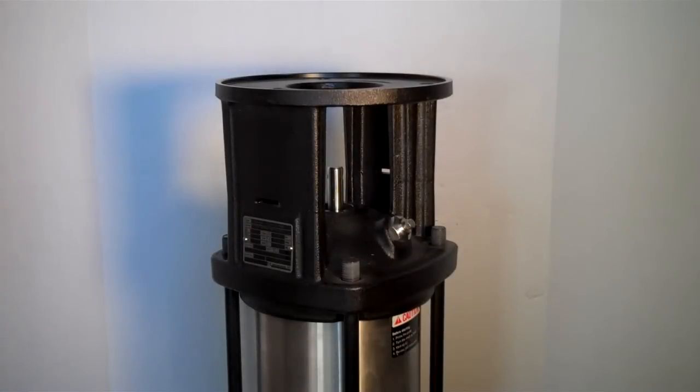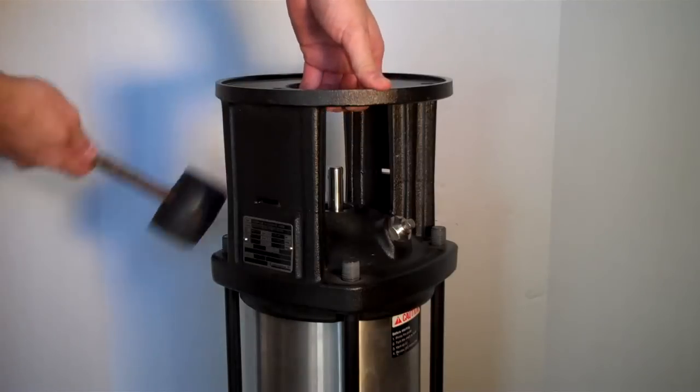To remove the pump head and motor stool, just pull it straight up. You may have to hit it with the mallet a couple times just to loosen it up.